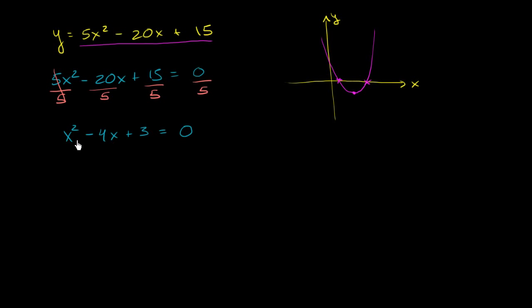And now we can attempt to factor this left-hand side. And we say, are there two numbers whose product is positive 3? The fact that their product is positive tells you that they both must be positive. And whose sum is negative 4, which tells you they both must be negative if we're getting a negative sum here.